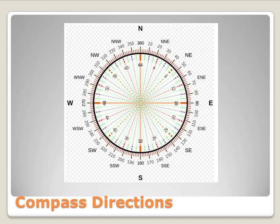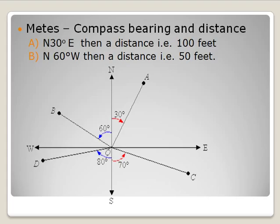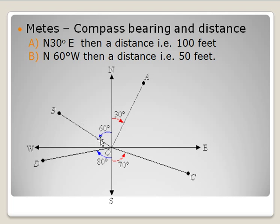When using metes and bounds, the system uses two cardinal directions, a degree, and a distance. The metes incorporate the compass bearing and the distance. For example, to identify a point A, I might say it is north 30 degrees east — 30 degrees east of north — and then however many feet needed to reach that point. You could also say north 60 degrees west, 70 degrees east of south, or 80 degrees west of south.